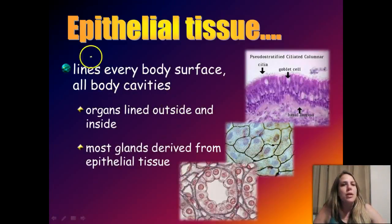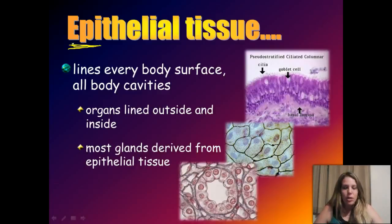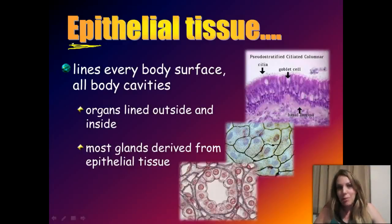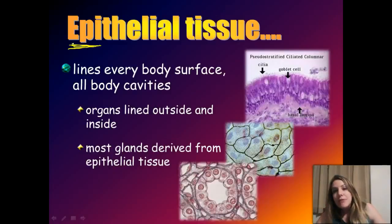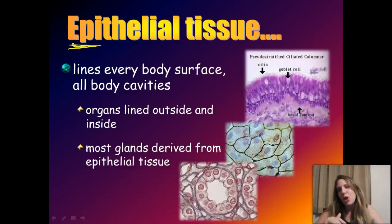Let's start with epithelial tissue. My goal is that by the end of this section, you'll be able to look at any epithelial tissue image and identify what kind of epithelial cells are making it up — it's actually really fun, like a game. Let's look at some of the root words. The prefix 'epi' means 'upon' — for example, the epigastric region means 'upon the belly region.'